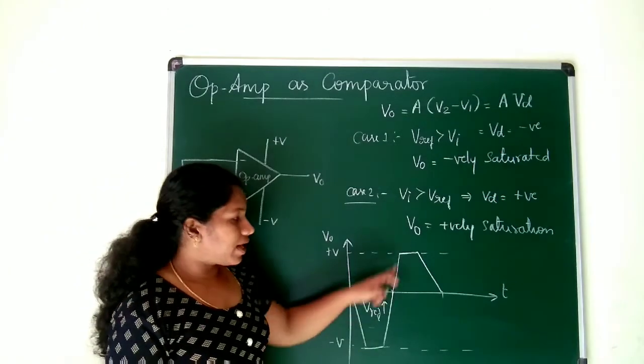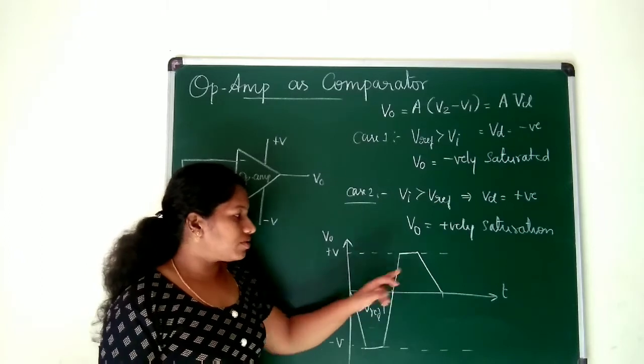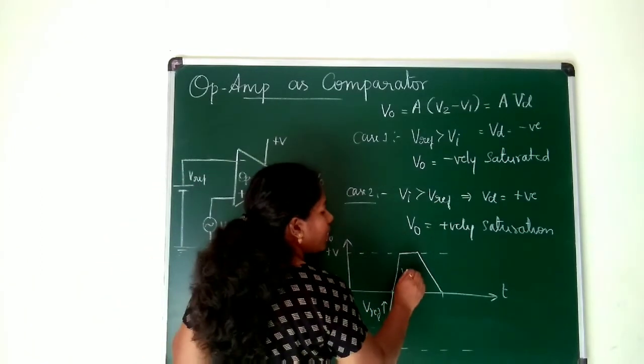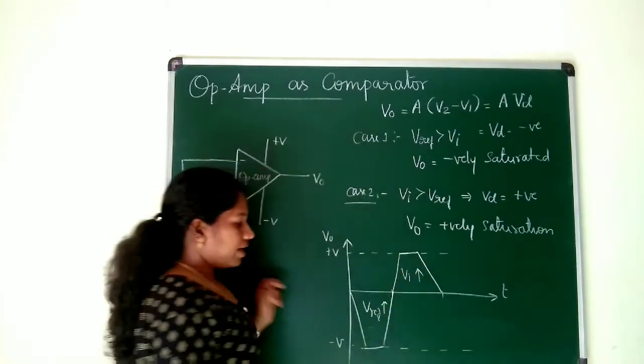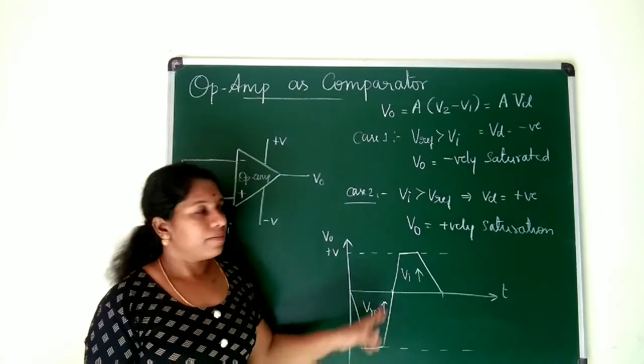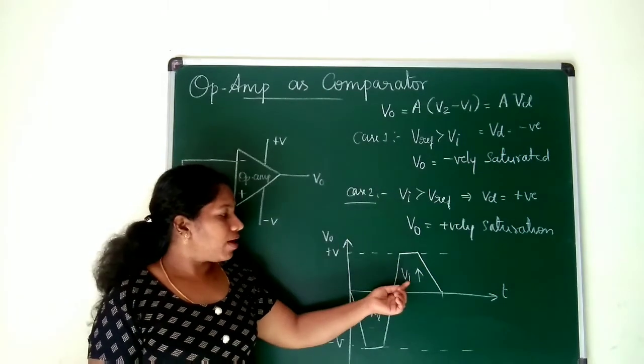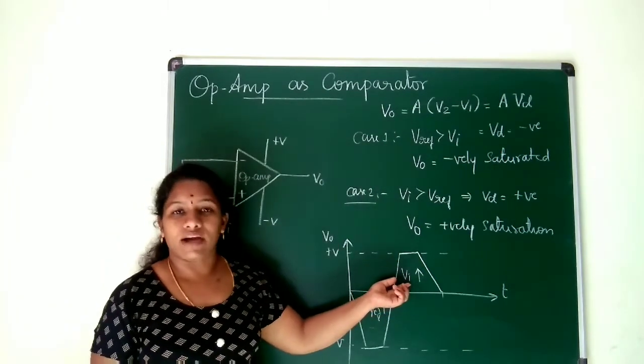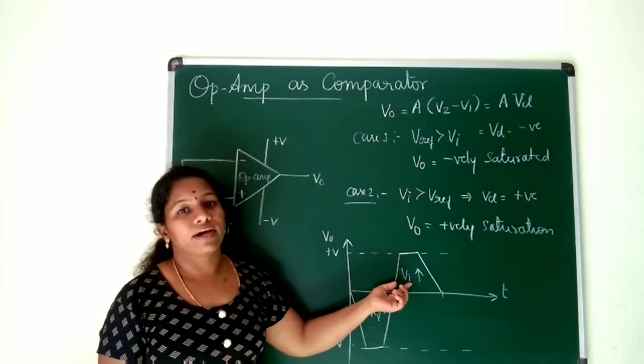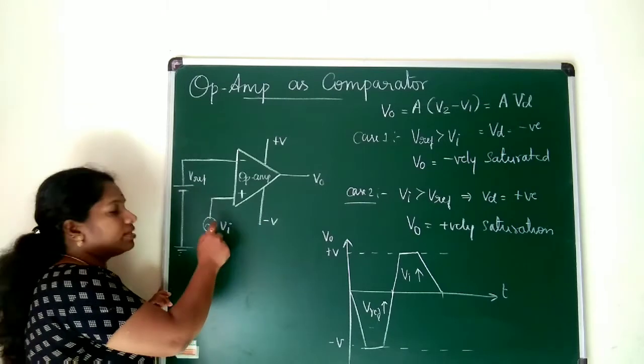So saturation happens because of the high gain and you are getting positive cycle because VI is greater. And you are getting negative cycle because V reference is greater. Based on the equation I can say that when you are having positive cycle at the output that says that your V2, V2 terminal which is connected to a signal here, this is greater.